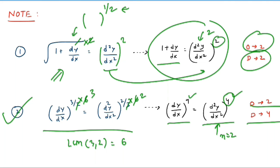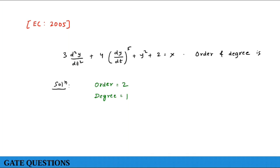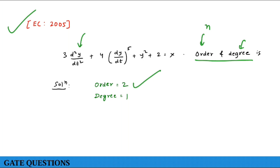GATE Telecom 2005: d²y/dt² + 4(dy/dt)^5 + y² + 2 = x. Find order and degree. The maximum n is 2, so order = 2. The power of the highest-order term d²y/dt² is 1, so degree = 1.